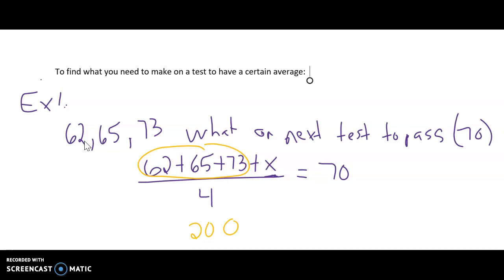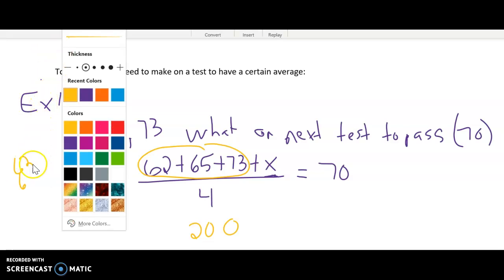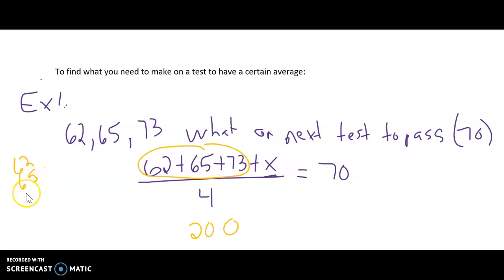Hold on just a second. I have to come over here. I can't do it in my head. 62 and 65, and 73. That's 0, 7, and 7 is 14. Oh yeah, 200 over 4 plus x equals 70.